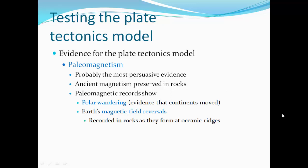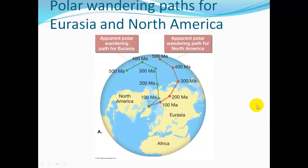Another piece of evidence is paleomagnetism — probably the most persuasive evidence. This is ancient magnetism preserved in rocks. Paleomagnetic records show polar wandering, evidence that continents had moved. Earth's magnetic field reversals are recorded in rocks at ocean ridges. As rocks solidify, they retain a memory of where the North Pole was — they're magnetically lined up pointing toward it. The North and South Poles actually reverse every once in a while, shifting over time.